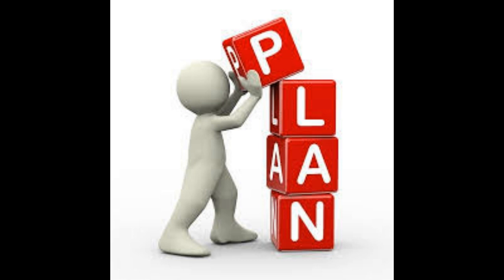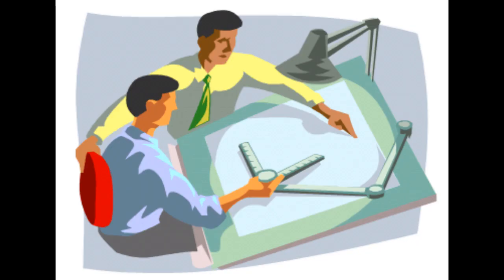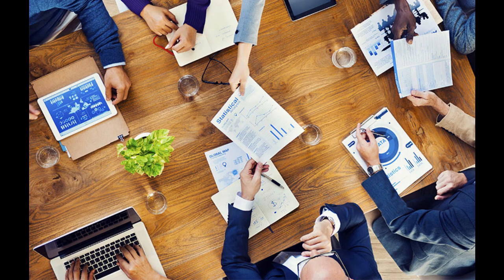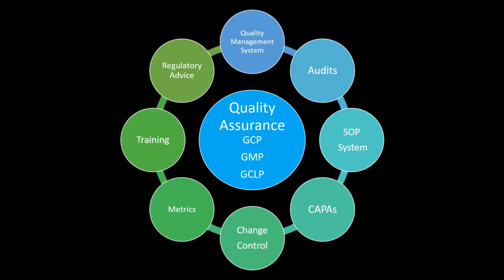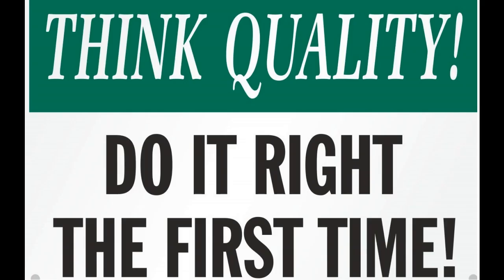That means quality assurance aims to improve processes in order to prevent things from going wrong in the future. It is done in the planning phase of a project. Quality assurance is a process-oriented activity and the main objective of quality assurance is to prevent defects and mistakes. Quality assurance is a preventive technique and proactive measure. It defines processes, strategies, and policies, developing checklists and establishing standards that need to be followed throughout the course of the project.